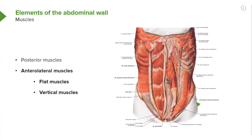For our anterolateral muscles, we'll divide those into flat muscles and vertical muscles. We can see our flat muscle region here — we'll have three pairs of flat muscles. This represents the external abdominal oblique. Over here the external abdominal oblique has been cut along this edge and along its aponeurosis.